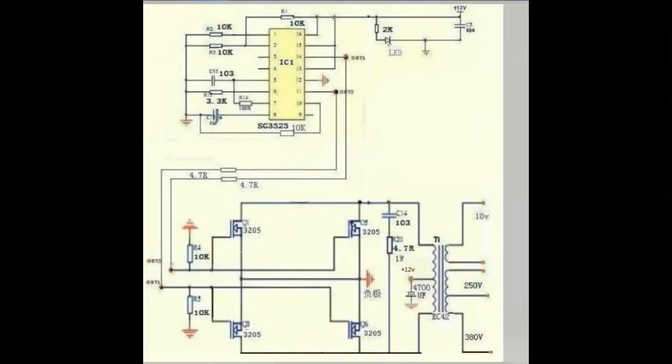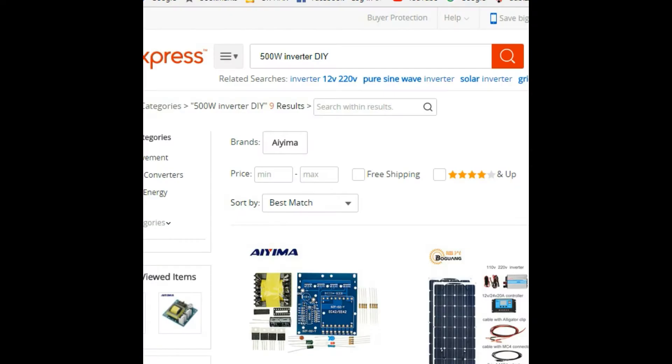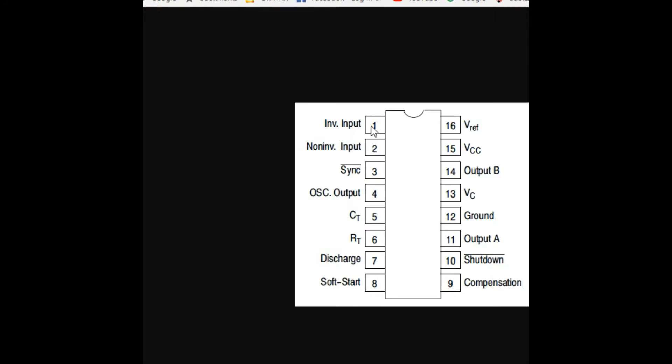Okay, so here we are taking a look of the circuit diagram. As we see that this uses the SG3525 IC, and if you take a look on the pinouts then we have about 16 pins of this IC. However, these two pins are used to define the frequency generating level at the output B and output A.